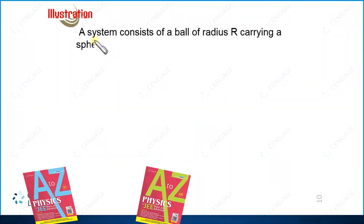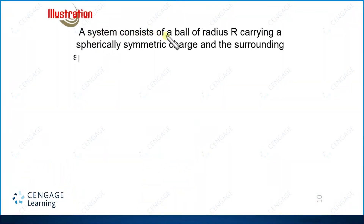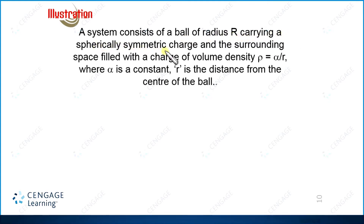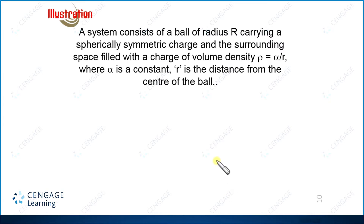In this illustration, it is given: a system consists of a ball of radius capital R carrying a spherically symmetrical charge, and the surrounding space is filled with a charge of volume density rho equal to alpha divided by R, where alpha is a constant and R is the distance from the center of the ball. We are having a system of charge here — one is fixed charge occupied by the ball, and second charge is having non-uniform charge density with alpha divided by R relation.